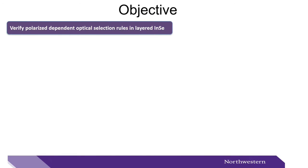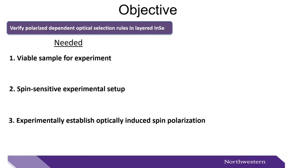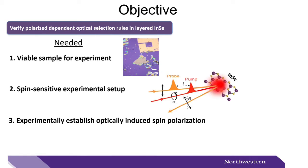Thus, the objective of this work is to demonstrate or verify polarization-dependent optical selection rules in layered indium selenide. What's needed to accomplish this is: one, a viable sample for the experiment; two, a spin-sensitive experimental setup; and three, we have to experimentally establish optically induced spin polarization.